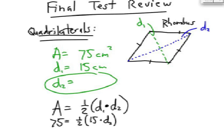Let's go ahead and solve this. I can multiply both sides by 2, which is the way I can get rid of the fraction, and therefore I have 150 equals 15 D2.